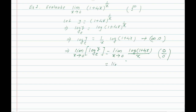Applying L'Hôpital's rule: the derivative of the numerator log(1 + 4x) is 1/(1 + 4x) multiplied by 4, and the derivative of the denominator x is 1. As x tends to 0, we get 1/(1 + 0) times 4 divided by 1, which equals 4.